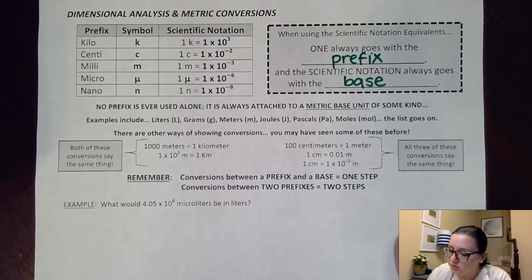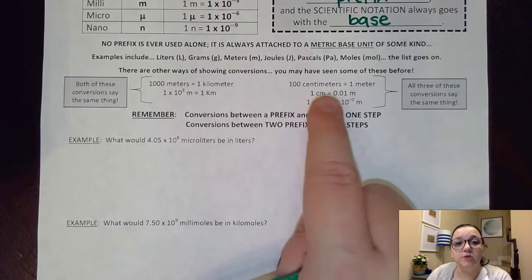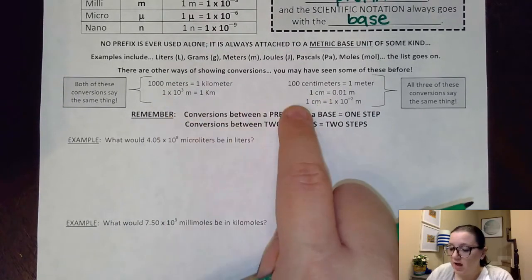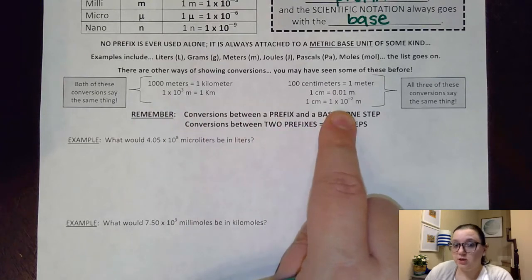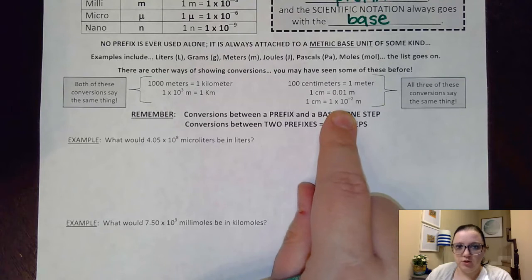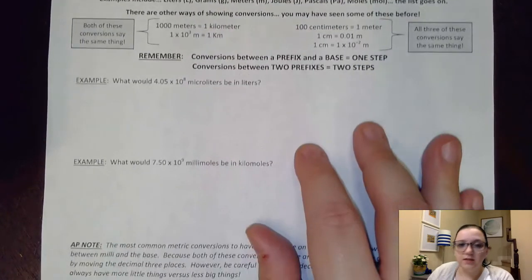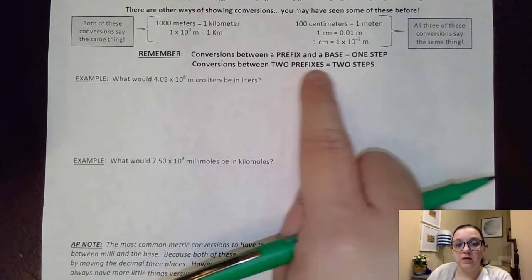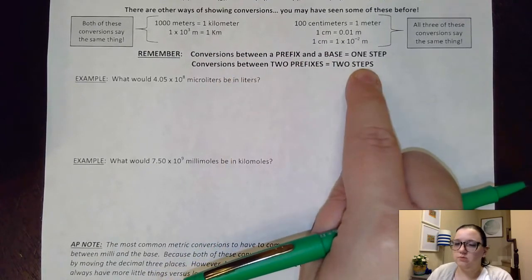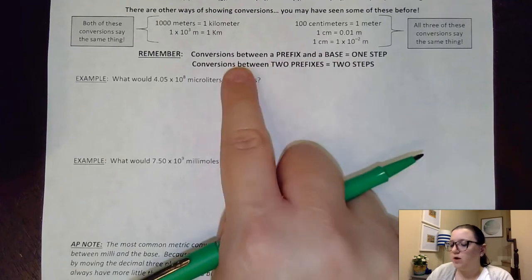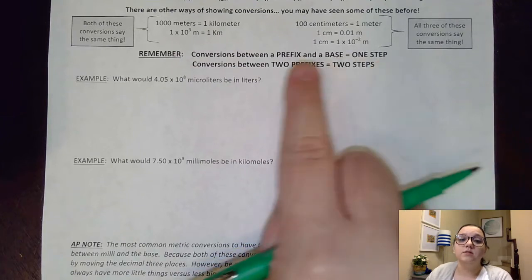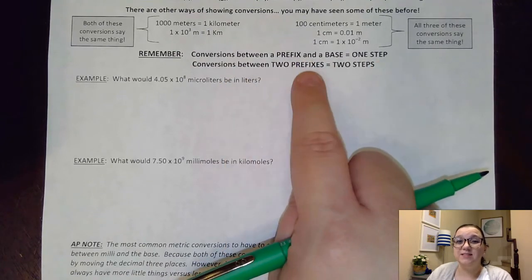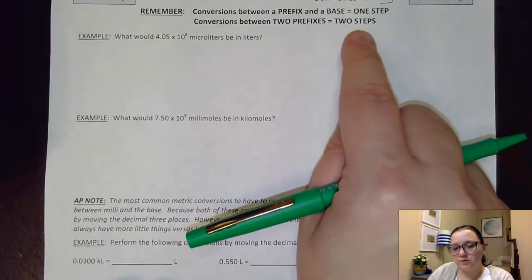I love using this statement right here when I do metric conversions. Whenever I go between a prefix and a base, that's going to take one dimensional analysis step, whereas conversions between two prefixes take two steps. So let's look at two examples of that.